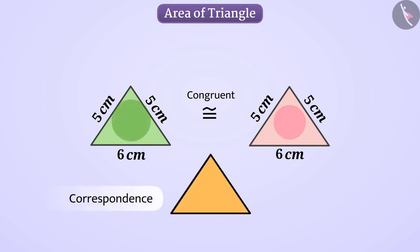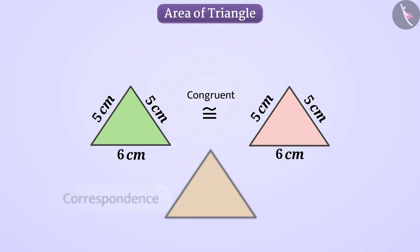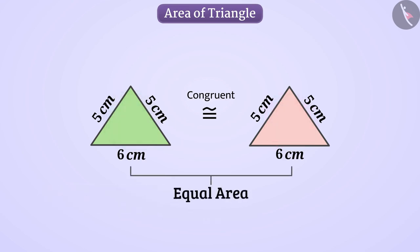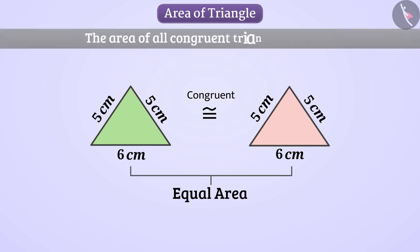We see that under a correspondence, the two triangles completely cover each other. Therefore, we can say that the area of these two triangles is equal. Generally, the area of all congruent triangles is equal.